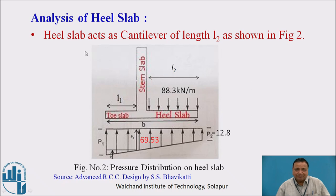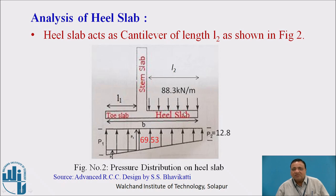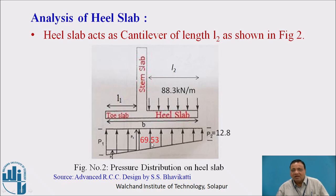Now, analysis of heel slab. The heel slab acts as a cantilever slab having a length L2, as shown in figure 2. The heel slab is subjected to a downward pressure from the weight of earth retained above it. Due to the horizontal earth pressure and the self-weights of the stem slab, toe slab, and heel slab, there will be soil reactions P1, P2, P3, and P4 under the base slab.